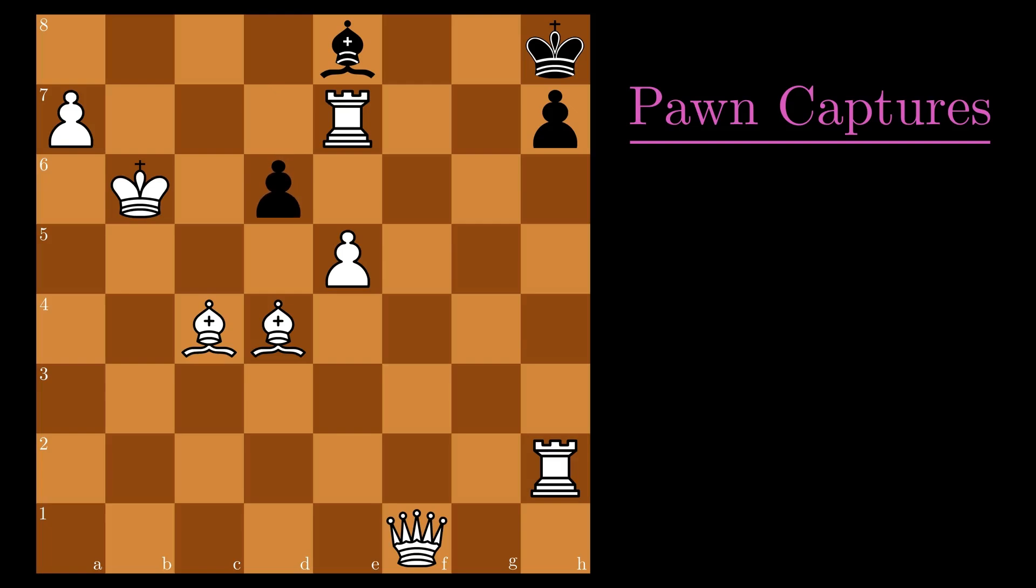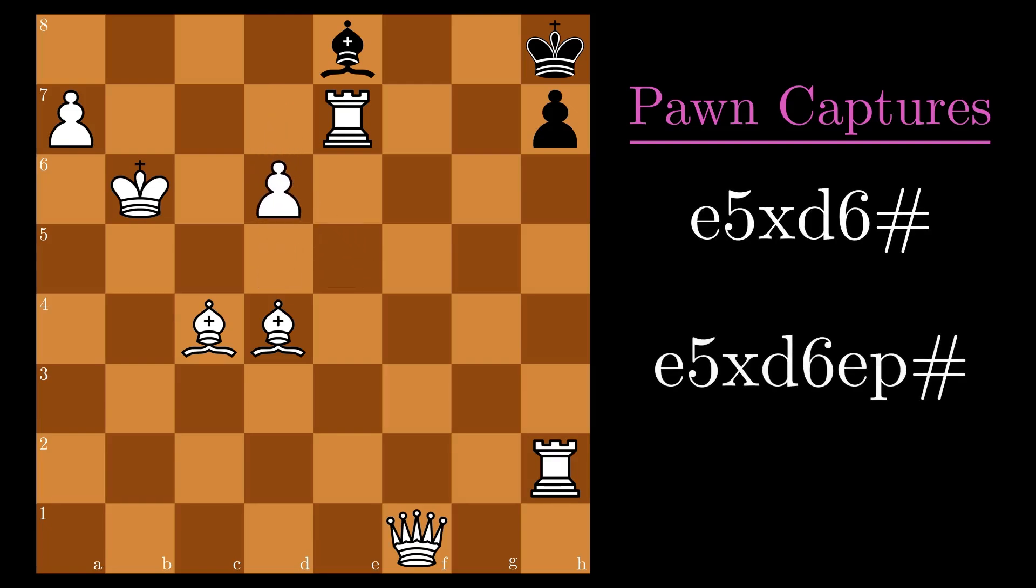This notation also labels en passant moves with ep, allowing me to differentiate them from normal pawn captures. As such, I count these moves separately, and surprisingly, not a single viewer was upset with my decision.